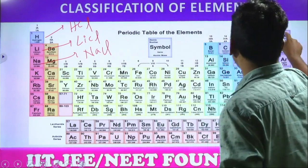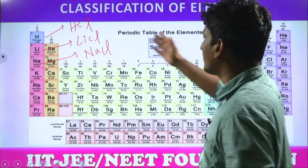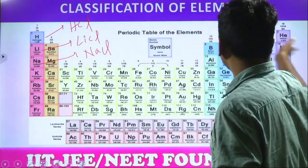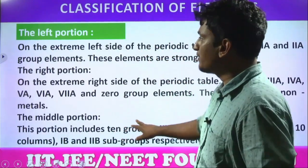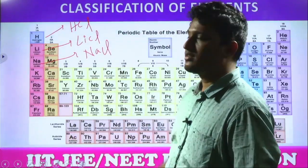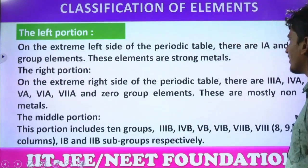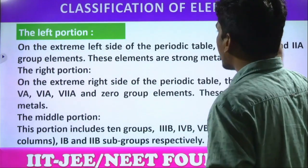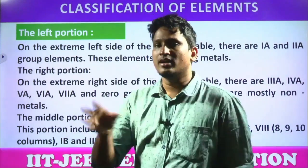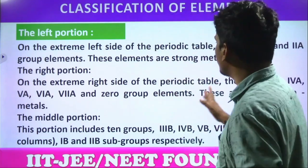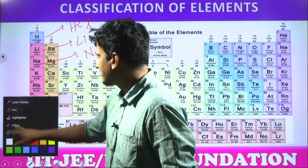Why is there a space, and why is helium placed on the right side? Helium resembles the properties of that group, which is why it is placed there. And then lithium, beryllium, boron, and so on follow. On the extreme left side of the periodic table there are group 1 and group 2 elements — these are the old notations 1A and 2A. We will follow normal numbers only. First group and second group elements.